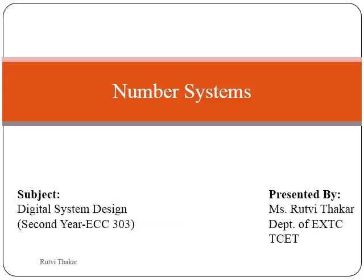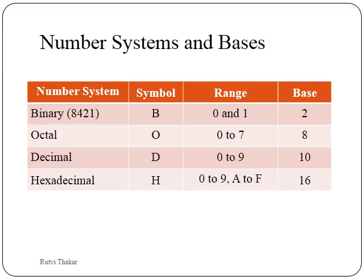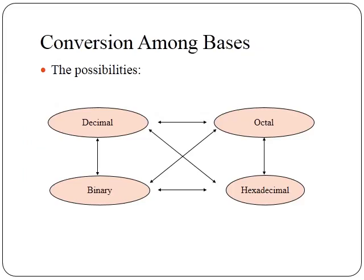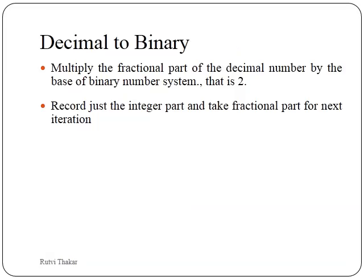Welcome to the last video of number systems and the conversions. In this last video we will see how to convert the fractional part of each and every number system to the other number system. There are four number systems which can be converted into each other. We will see the fractional part conversion of all. The possibilities of conversions are from one number system to all remaining three number systems. This was the conversion summary if I want to convert from one number system to another number system.